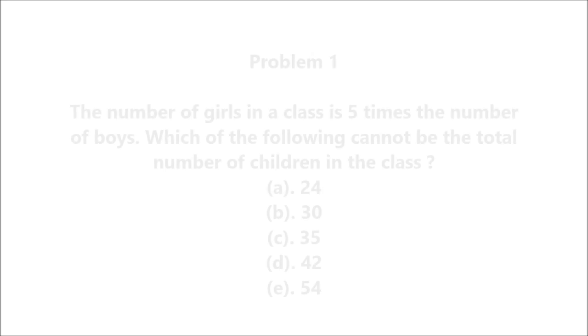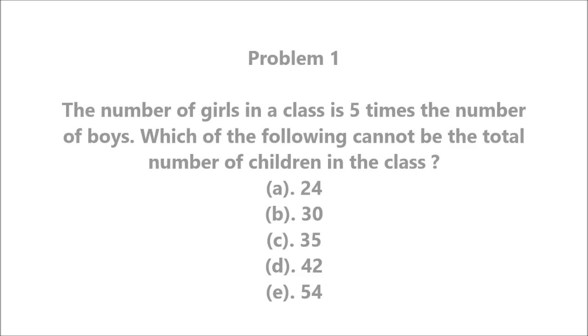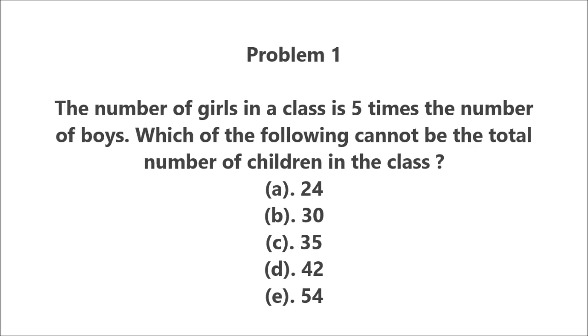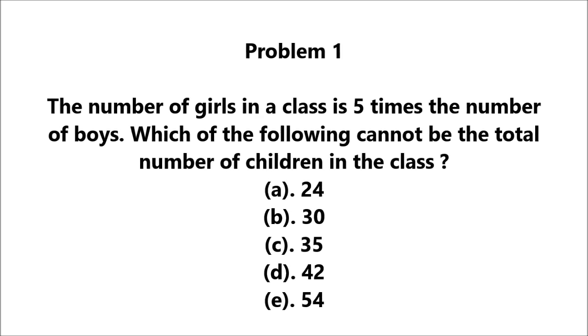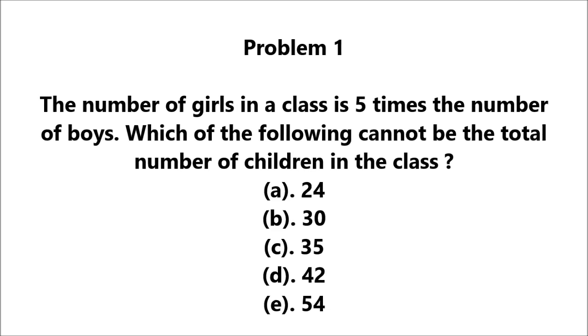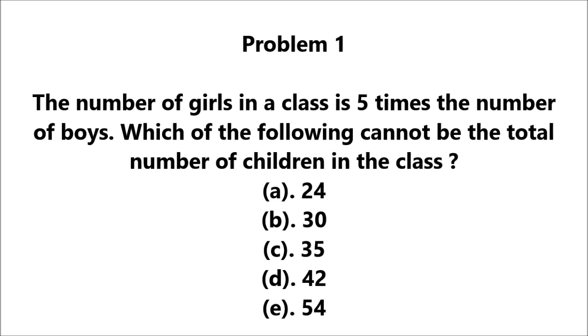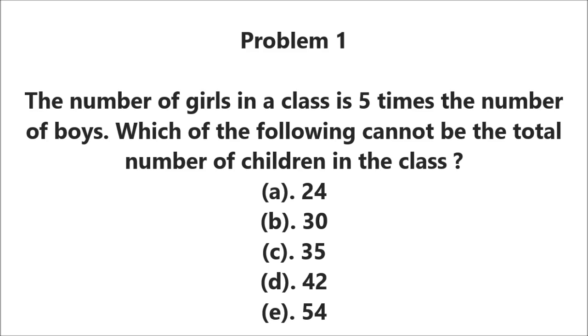Here's the first sum. Problem 1. The number of girls in a class is 5 times the number of boys. Which of the following cannot be the total number of children in the class? A. 24, B. 30, C. 35, D. 42, and E. 54.